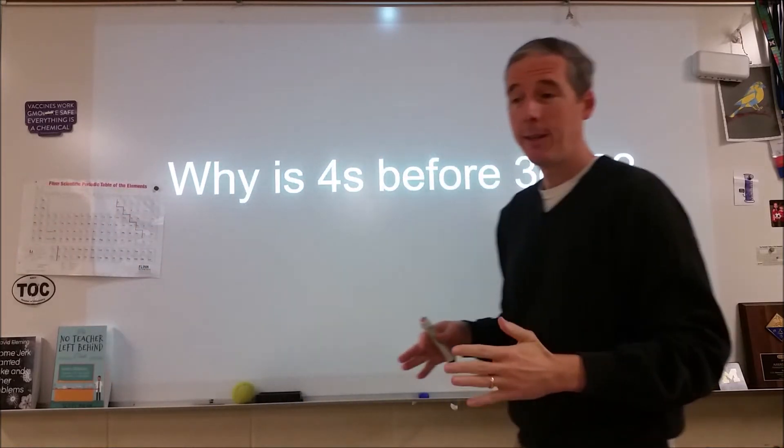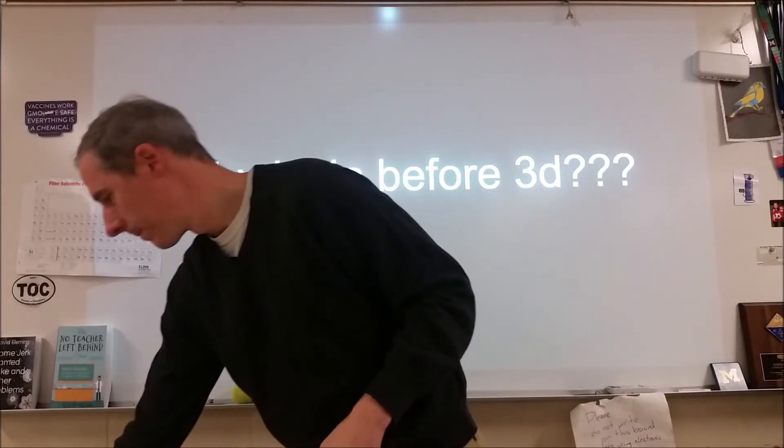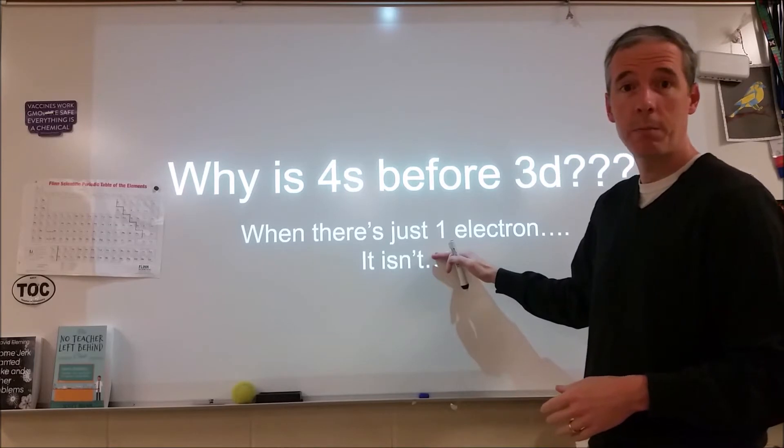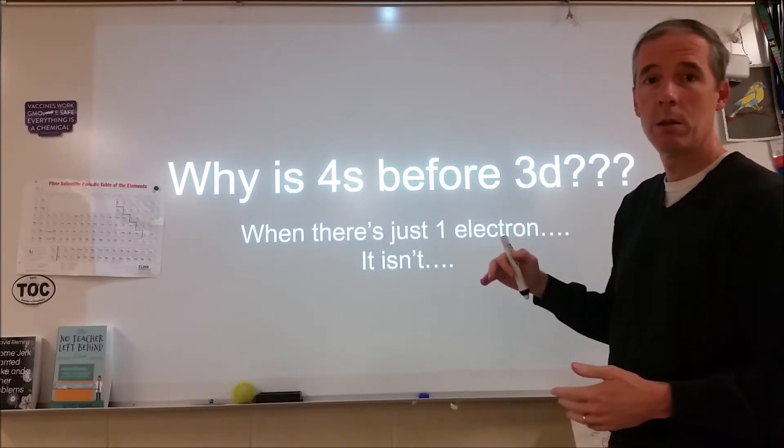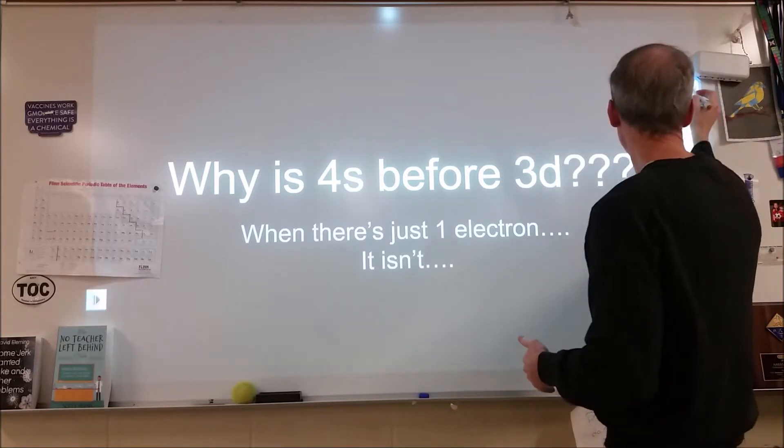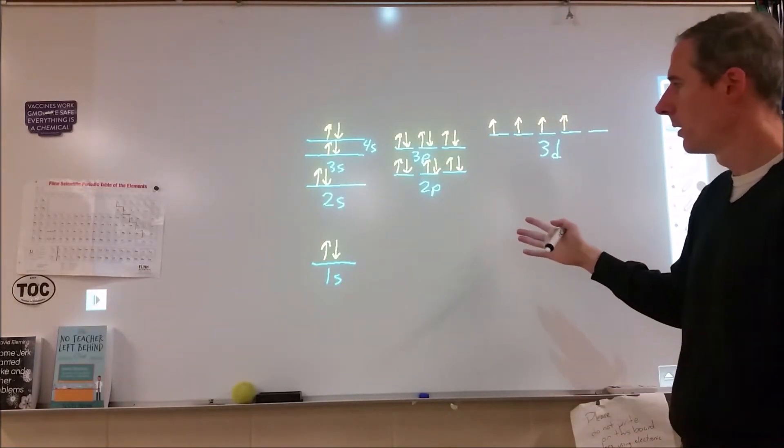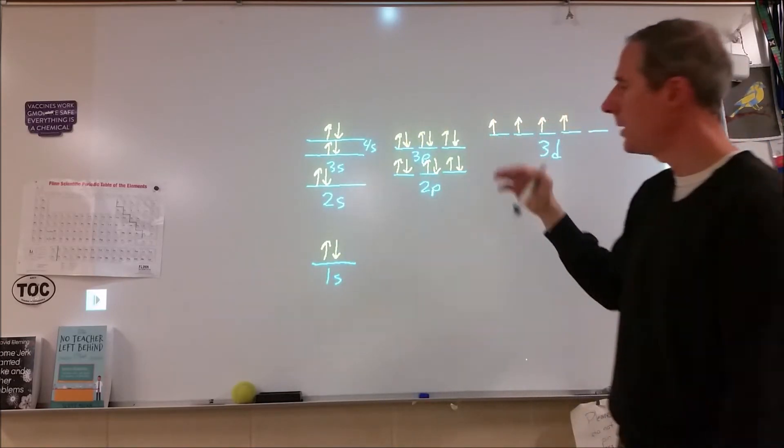First thing is they're not out of order for a one electron system. So if we just have one electron, if we just have a hydrogen atom, then all of a sudden 4s is not before 3d. So when we look at an orbital diagram like this, we have our 1s, 2s, 2p, 3s, 3p, 4s, 3d.